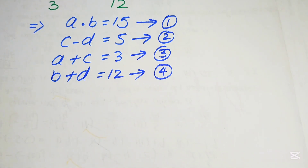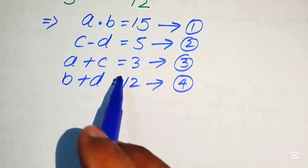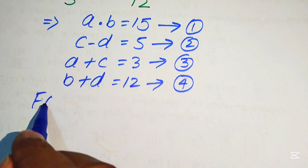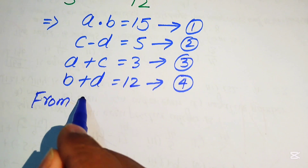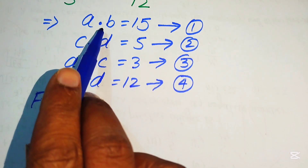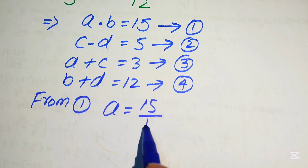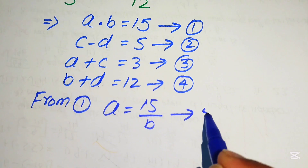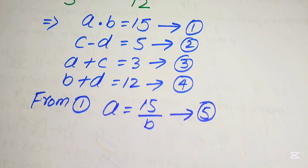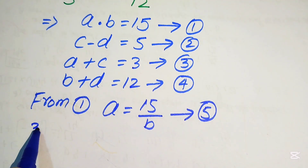Our next target is to find the values of A, B, C, and D. From equation 1, we move B to the right-hand side: A equals 15 over B. We call this equation 5. We now substitute this value of A into equation 3.